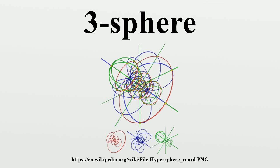In mathematics, a three-sphere is a higher-dimensional analogue of a sphere. It consists of the set of points equidistant from a fixed central point in four-dimensional Euclidean space.